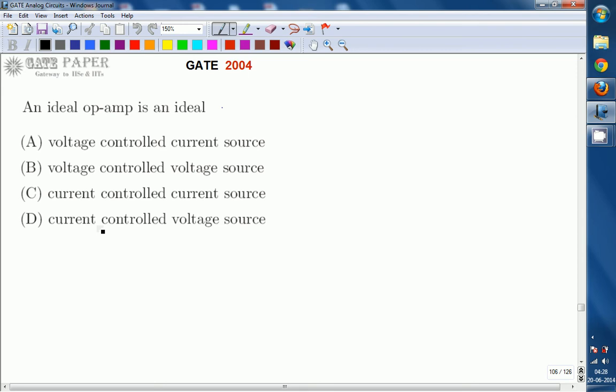A. Voltage controlled current source, B. voltage controlled voltage source, C. current controlled current source, D. current controlled voltage source. Out of these four options, which is going to be the right one? An ideal operational amplifier will be considered as...